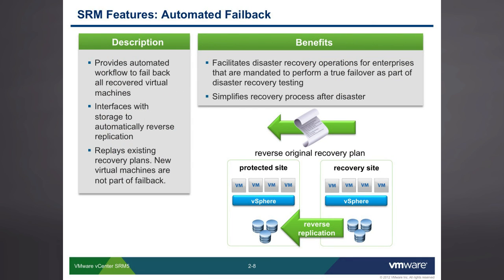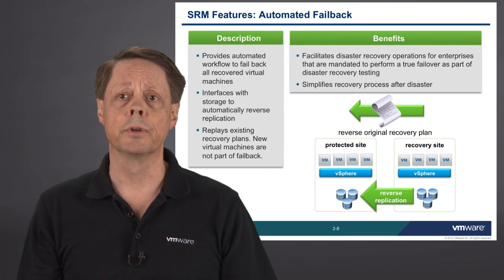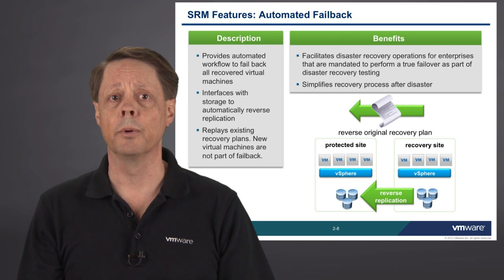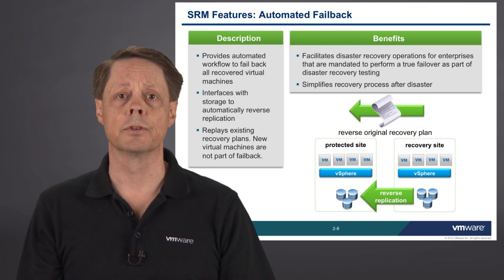SRM 5 also introduces automated failback. After performing a failover operation, we now have the opportunity to use what's called a single-button re-protect, and then subsequently perform a failback. The problem after a failover is that you're no longer protected — recovery plans need to be rebuilt to work in the opposite direction. Re-protect re-configures the virtual machines that failed from the protected site to the recovery site originally, so if there's another failure on the new protected site, those VMs can fail back. This one-button re-protect is a feature customers have been asking for since SRM 1.0.